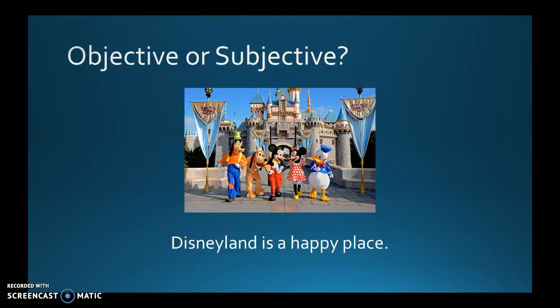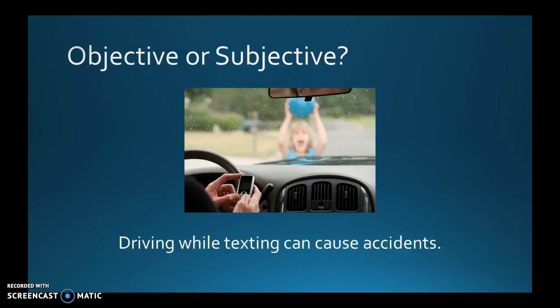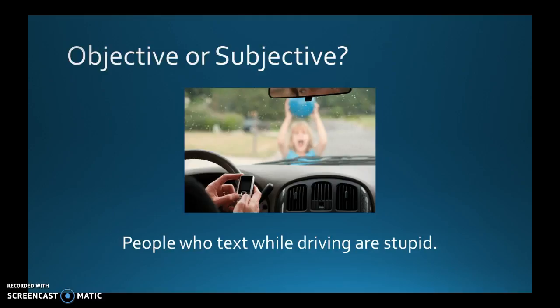'Disneyland is a happy place' — that's a subjective statement. Disneyland is designed to be a happy place, but some people don't like big crowds or are scared of the rides, so to them it is not a happy place. That makes it a matter of opinion. 'Driving while texting can cause accidents' — that is objective; studies prove it. 'People who text while driving are stupid' — that is subjective, because calling them stupid is your opinion.